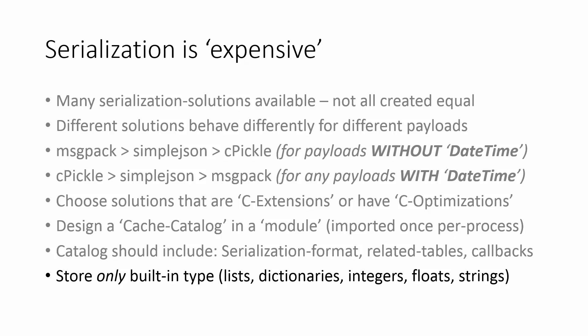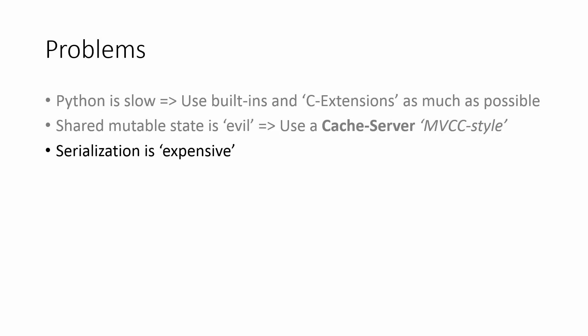MessagePack is cross-language — it's a C library with bindings for many languages, and JSON is available in every language. Serialization is expensive, but we can mix and match solutions with C extensions to minimize the penalty of deserialization on each request.